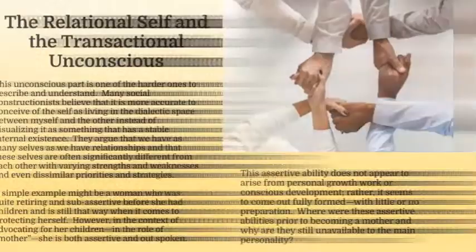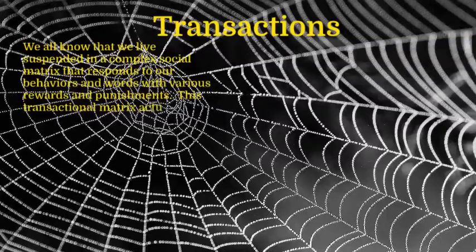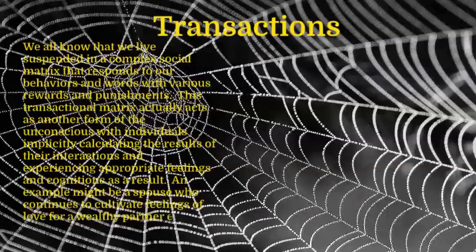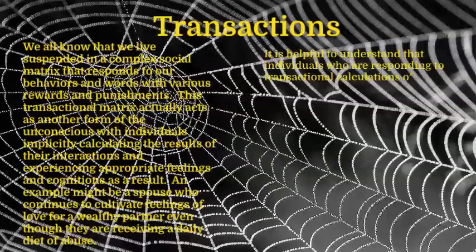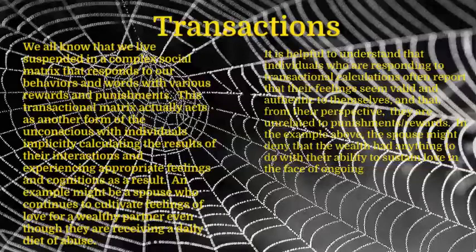Transactions. We all know that we live suspended in a complex social matrix that responds to our behaviors and words with various rewards and punishments. This transactional matrix actually acts as another form of the unconscious, with individuals implicitly calculating the results of their interactions and experiencing appropriate feelings and cognitions as a result. An example might be a spouse who continues to cultivate feelings of love for a wealthy partner, even though they are receiving a daily diet of abuse. It is helpful to understand that individuals responding to transactional calculations often report that their feelings seem valid and authentic to themselves, and that from their perspective, they are unrelated to punishments and rewards. The spouse might deny that the wealth had anything to do with their ability to sustain love in the face of ongoing abuse. In some cases, this denial might be conscious and manipulative; however, in many cases, the protagonist is literally unconscious about the transactional processes.